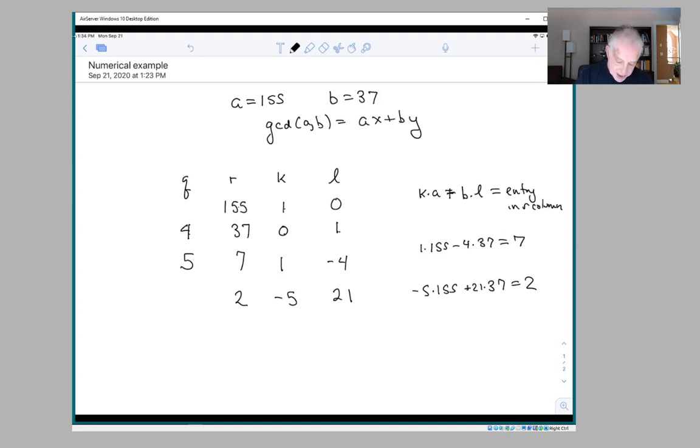Now you repeat the process again. 7 divided by 2 is 3. 7 minus 3 times 2 is 1.